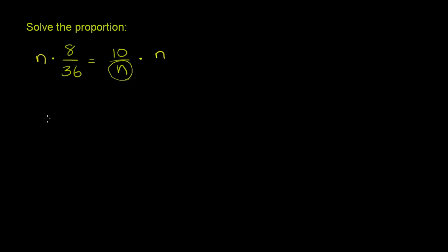The left-hand side of our equation becomes 8 over 36 times n. Or you could even view it as 8n over 36, because you could really view this as an n over 1. So the left-hand side becomes 8n over 36.